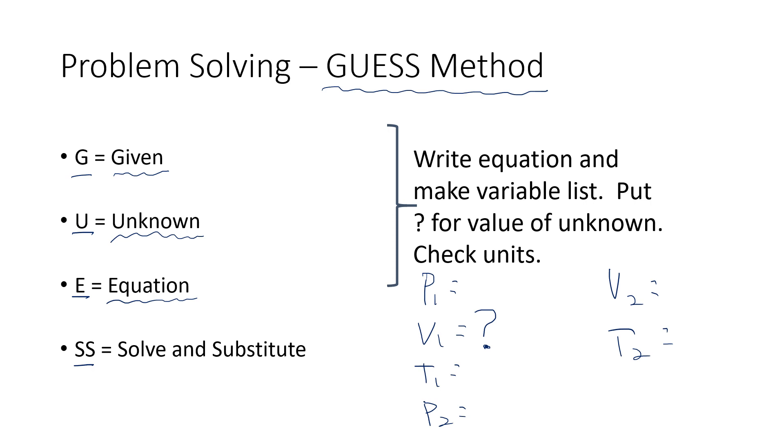And then once I've got my variable list done, then I'm going to either put all of those numbers into my equation and rearrange everything to get my unknown isolated. Or what I usually prefer to do because it's just plain less writing is I'm going to solve first, which means I'm going to just rearrange that equation to get the thing I want all by itself. And then I'm going to substitute in the numbers and crank that through my calculator.